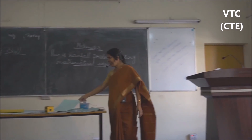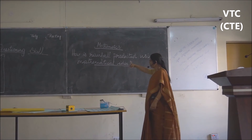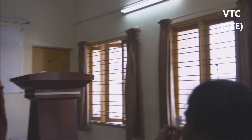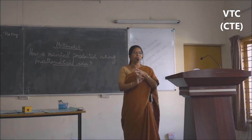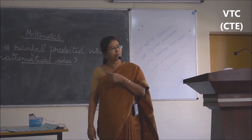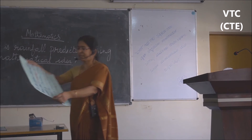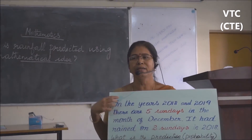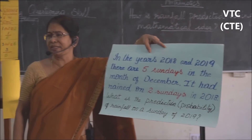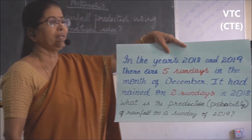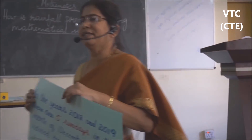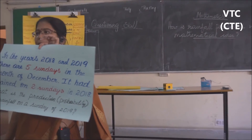In the same way, how do you actually predict the rainfall using the mathematical idea? By using probability. In that, which two outcomes should you know? Possible outcomes and favorable outcomes. For example, in the years 2018 and 2019 there were five Sundays, and on two of those Sundays it rained. What is the prediction that it will rain on a Sunday? Two by five. What is the prediction that it will not rain on a Sunday? Three by five.